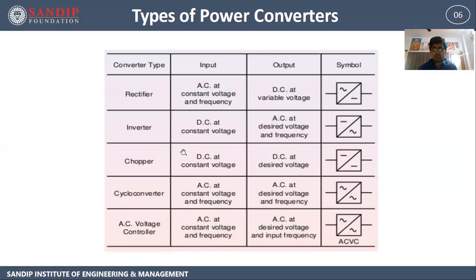Third is Chopper. A chopper is a power converter that converts DC at constant voltage to DC at desired voltage, so it is a DC to DC converter. Fourth is Cycloconverter — a power converter that converts AC at constant voltage and frequency to AC at desired voltage and frequency. The last is AC voltage controller, which also converts AC to AC at desired voltage but at the input frequency.